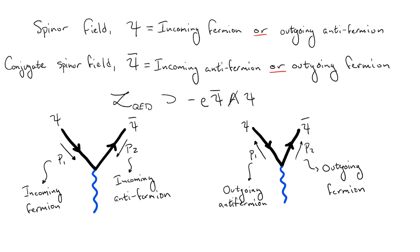The way we label the momentum will determine if this is a fermion or an antifermion. The fermion will always have the arrow on the line pointed in the same direction as the momentum, and the antifermion will always have the arrow on the line pointed in the opposite direction of the momentum.